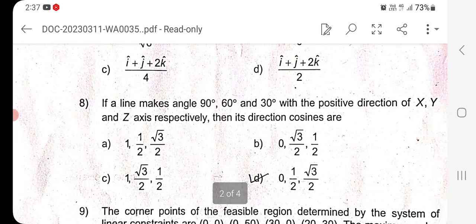Question 8: If a line makes angles 90 degrees, 60 degrees, and 30 degrees with the positive direction of X, Y, Z axis respectively, then its direction cosines are: cos 90 equals 0, cos 60 equals 1 divided by 2, cos 30 equals root 3 divided by 2. Therefore, option D is the right answer.